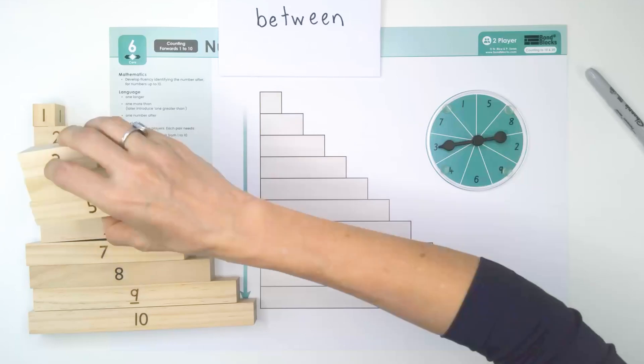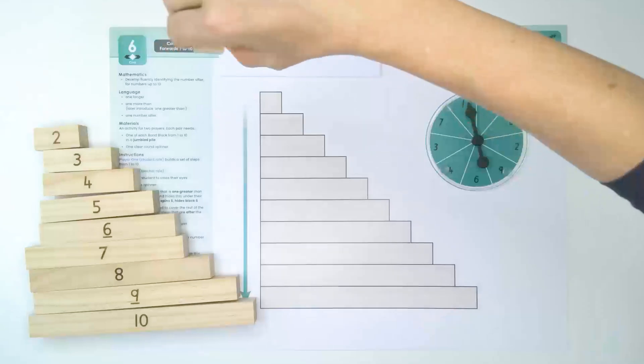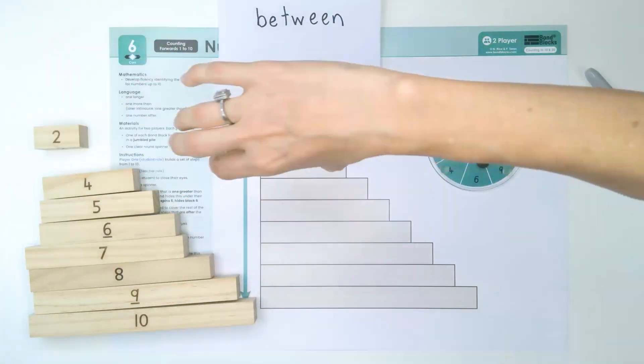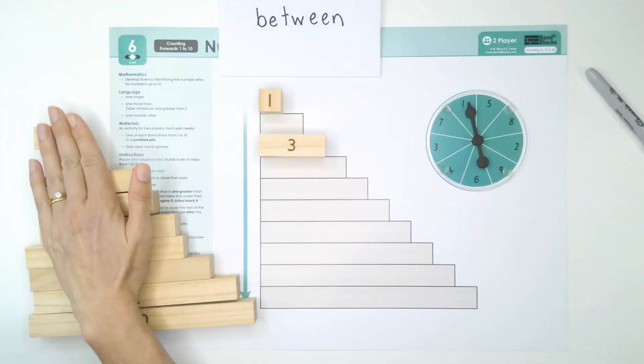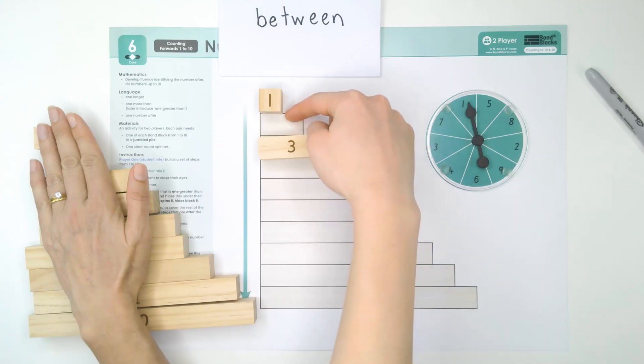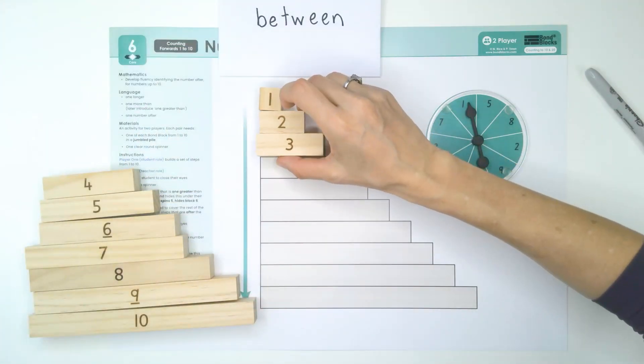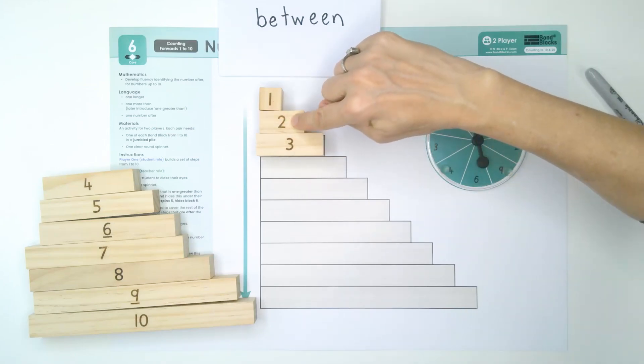And we'll just do one last example. Karis, you close your eyes. I'll spin. I place the one that's spun and the one that is two more. Open your eyes. Between one and three is two. Yes. Between one and three is two.